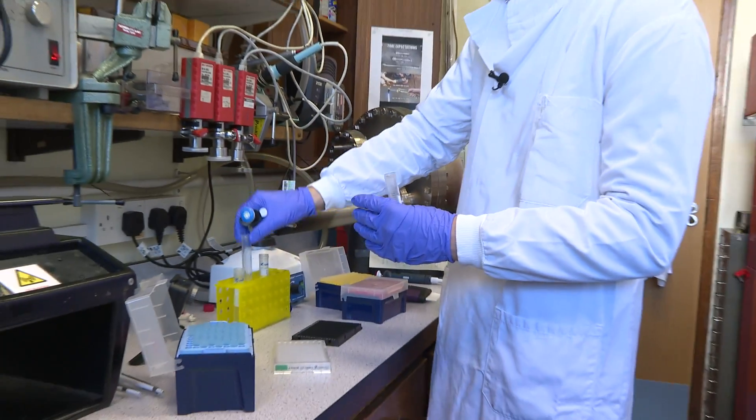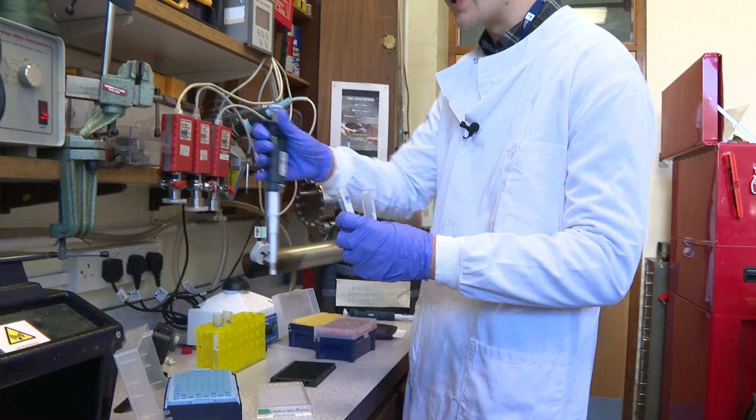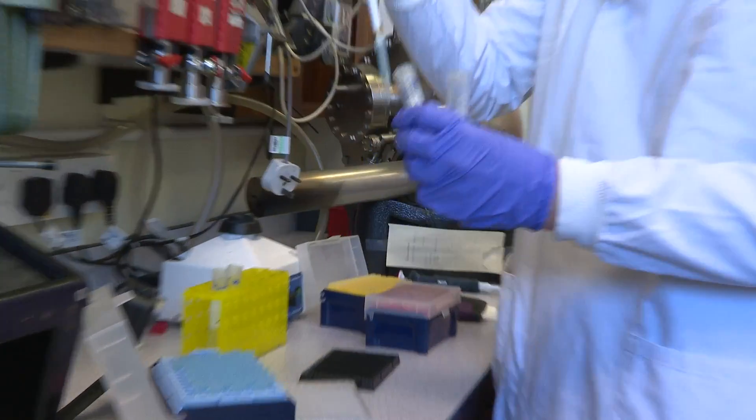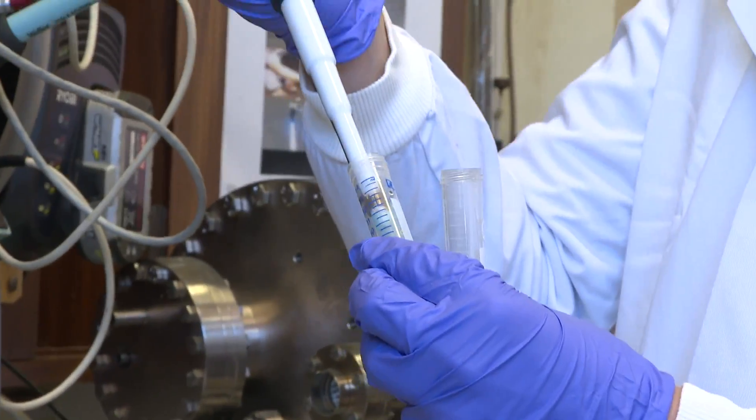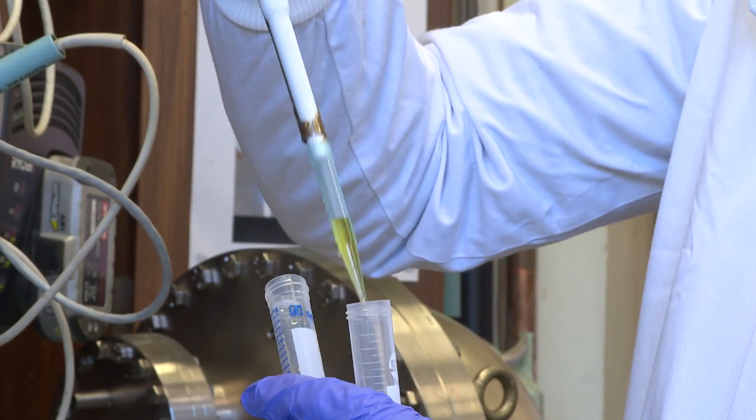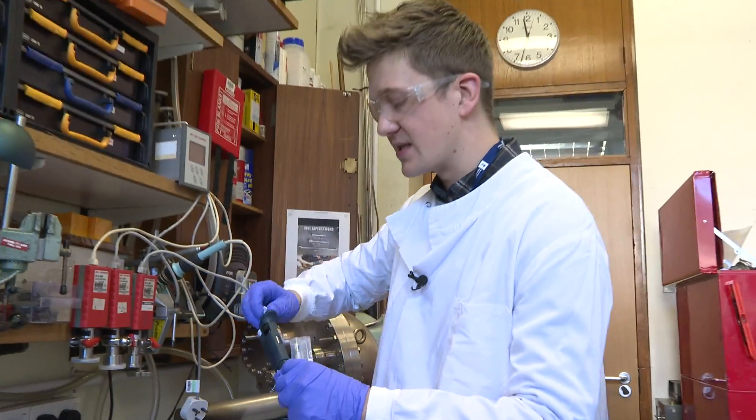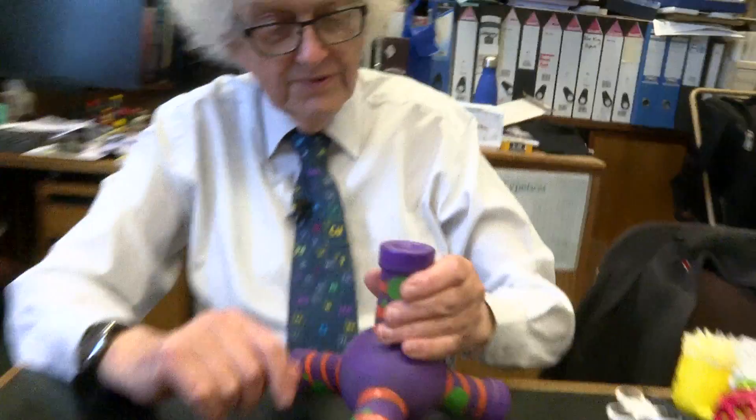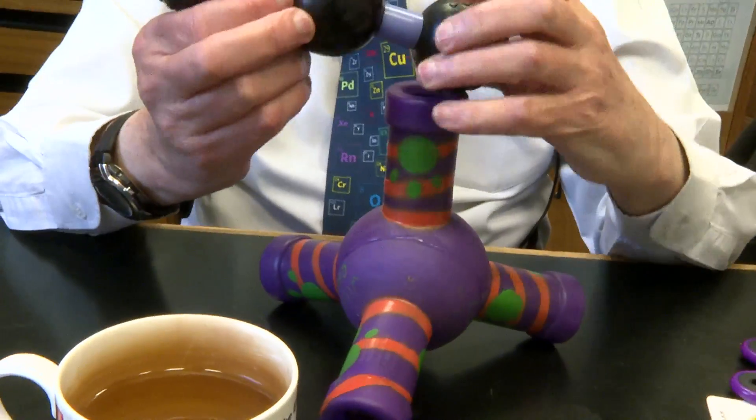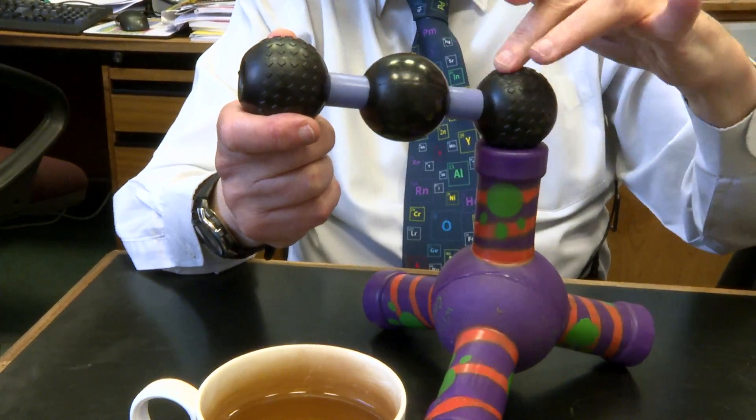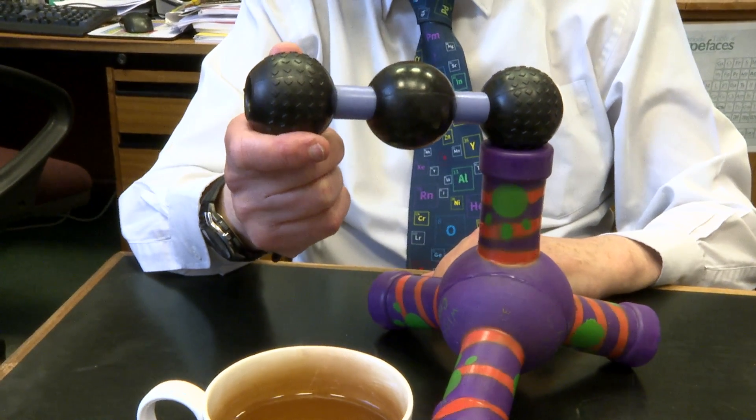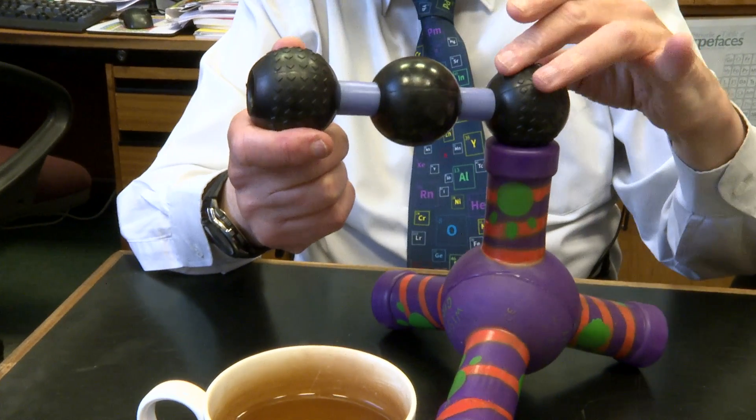And then now we're going to be adding the azide. This azide probe was developed by the Bertozzi group. As I said earlier, this is a fluorogenic probe that will only fluoresce once the reaction has proceeded. You have a carbon atom here and azide group is three nitrogen atoms joined together. And this is very reactive.